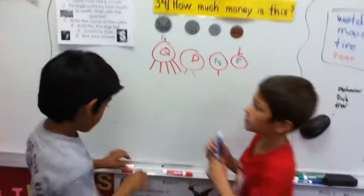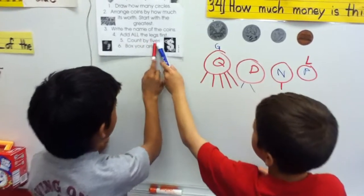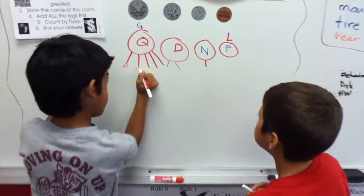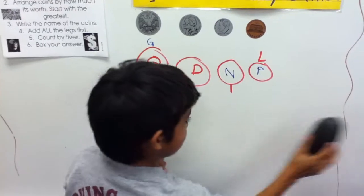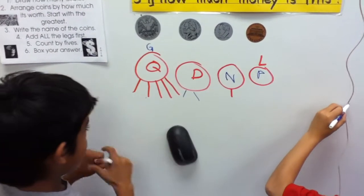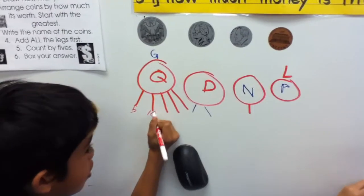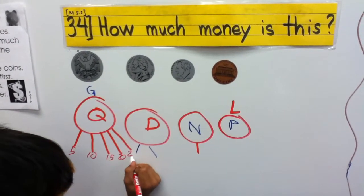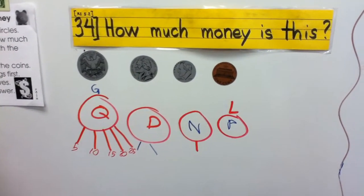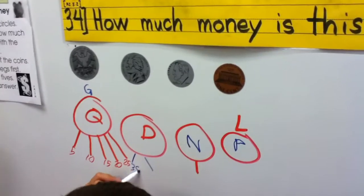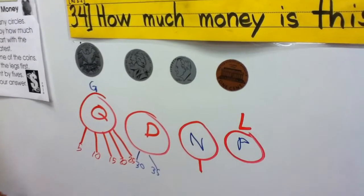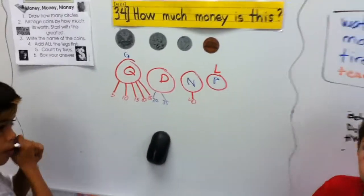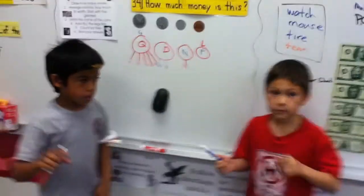Step 5: Count by fives. 5, 10, 15, 20, 25, 30, 35, 40. Baby Penny's worth one cent.